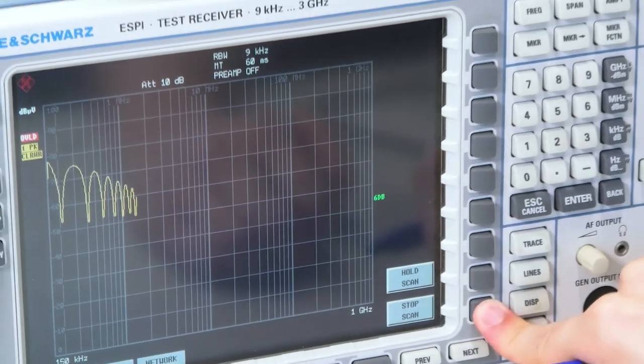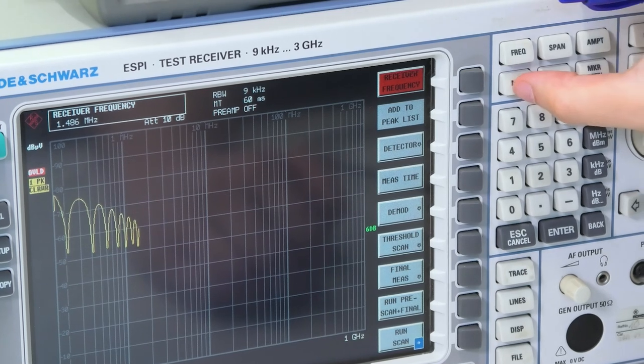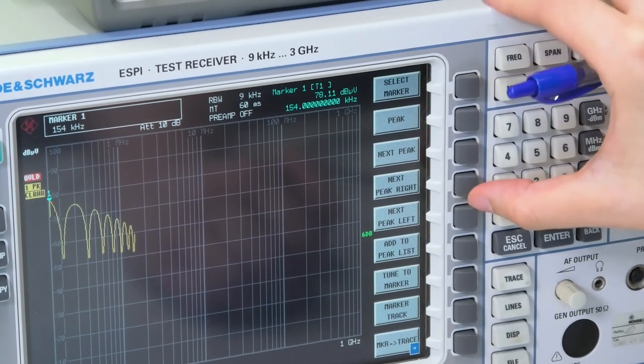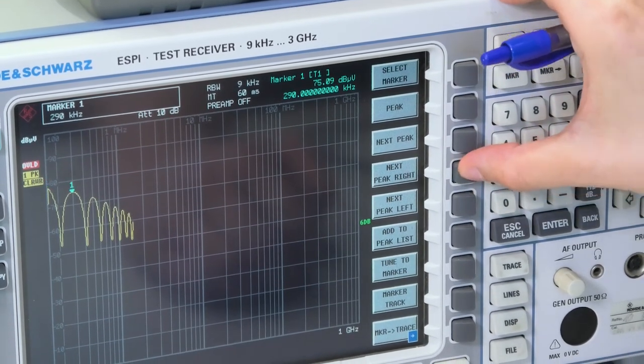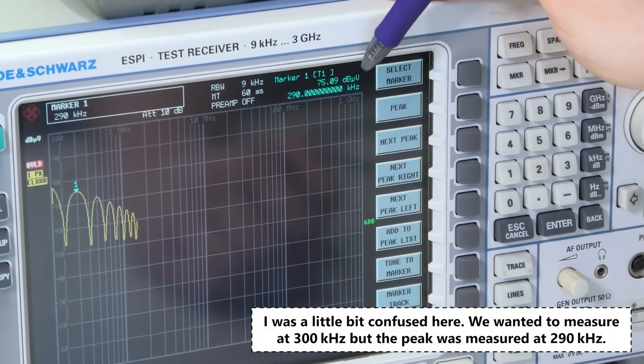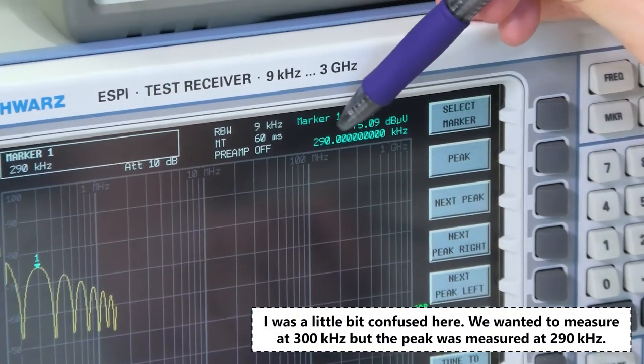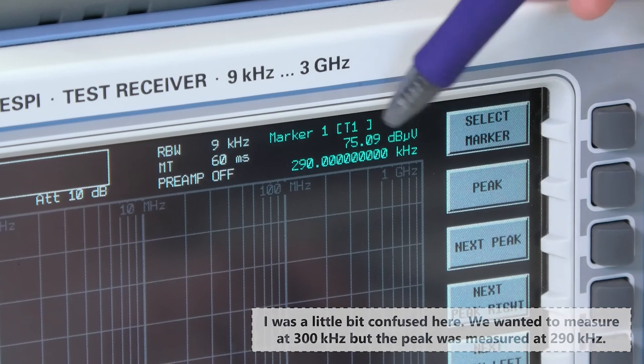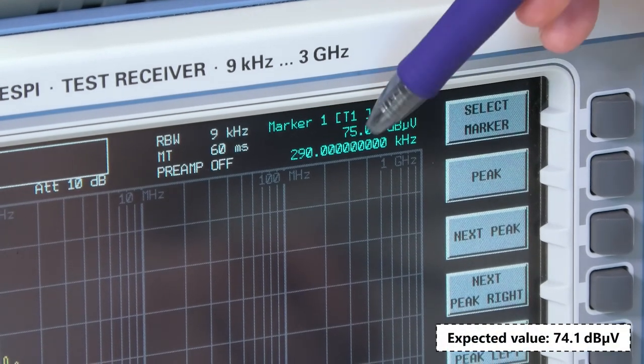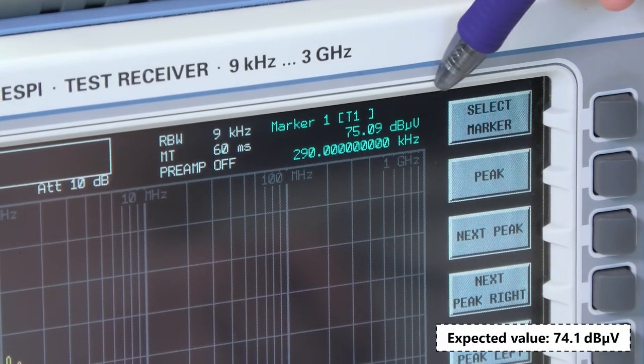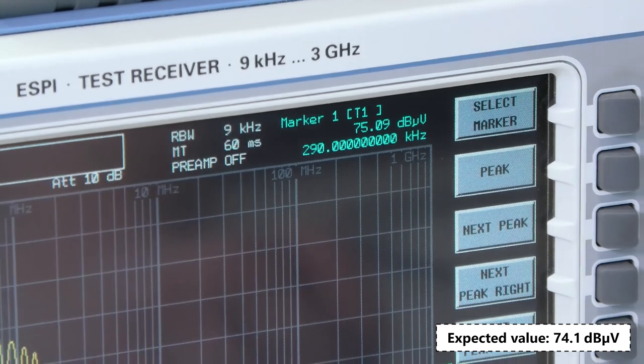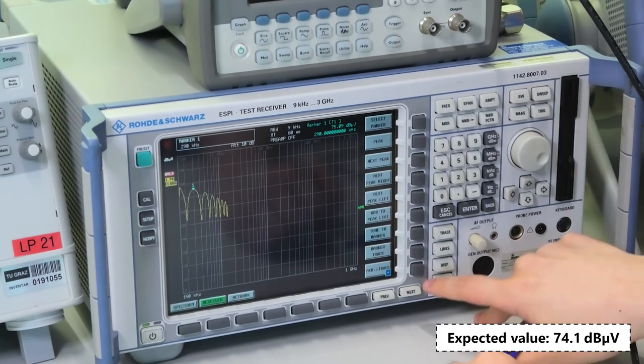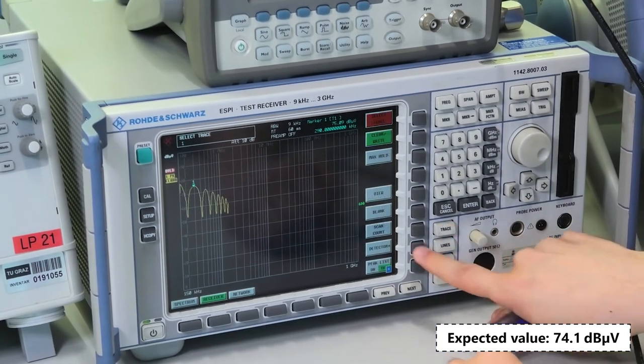Okay, let's stop the scan. And let's take a look on the level. Okay, it's not at 200 kilohertz, but at 290 kilohertz. And here we are measuring 75 dB microvolt. And now let's switch to the quasi-peak detector.